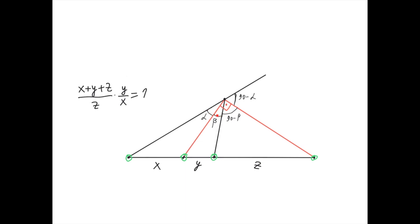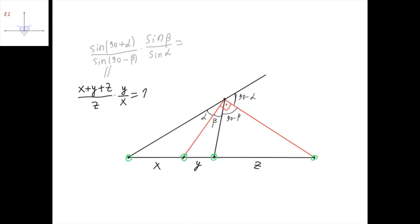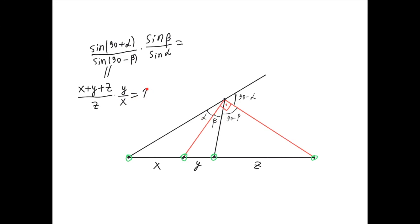Label this angle alpha and this angle beta; we're going to show that alpha equals beta. Since this angle is beta and this is 90, then this angle must be 90 minus beta. And since this angle is alpha and this angle is 90, then this angle must be 90 minus alpha. Now recall the cross ratio property: the cross ratio (X plus Y plus Z) divided by Z times Y divided by X equals the ratio of corresponding sines with respect to any point in the plane — that's sine of (90 plus alpha) divided by sine of (90 minus beta), times sine of beta divided by sine of alpha. So we have that 1 equals that cross ratio.